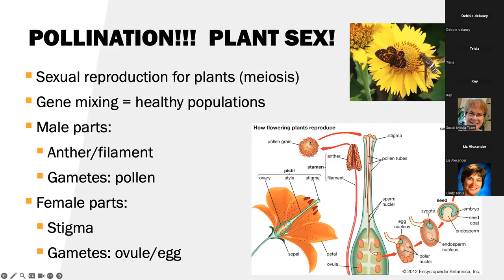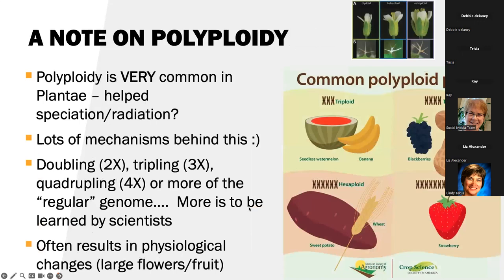And we can kind of see them here. Here's the anther, the filament, the pollen grain itself. It's going to land right on that stigma, have some pollen tubes and go down. So that is what pollination is.